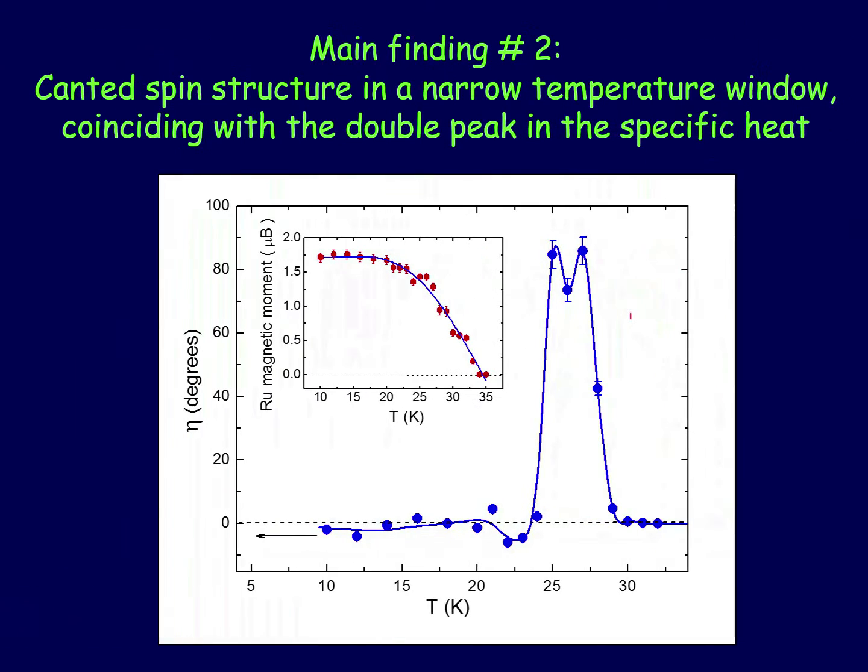Now we study the temperature dependence of the magnetic structure and we found a canting angle between the two ruthenium sublattices. And what we found which is very interesting is a double peak in the canting angle, again coinciding with the double peak in the specific heat.